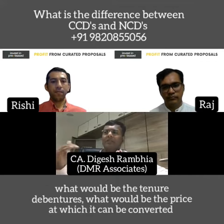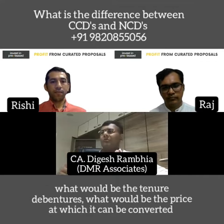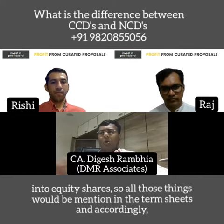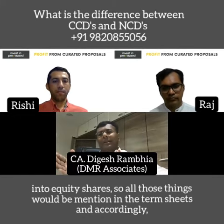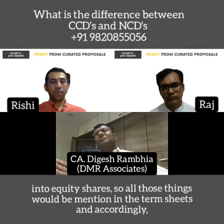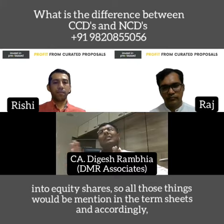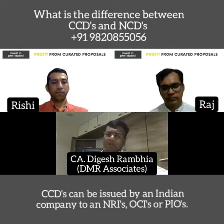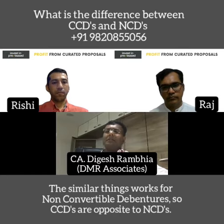The term sheet will cover the coupon rate, when the debentures can be converted into equity shares, the tenure of the debentures, and the price at which they can be converted into equity shares. Accordingly, CCDs can be issued by an Indian company to NRIs, OCIs, or PIOs. Similar provisions apply for non-convertible debentures.